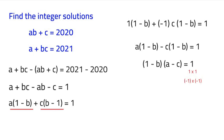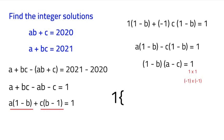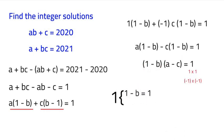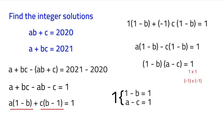The first case is if it were to be 1 times 1. So we'd have our 1 minus B is equal to 1, and A minus C is equal to 1. Now, we're solving it like that because if both sides are equal to 1, 1 times 1 is equal to 1.